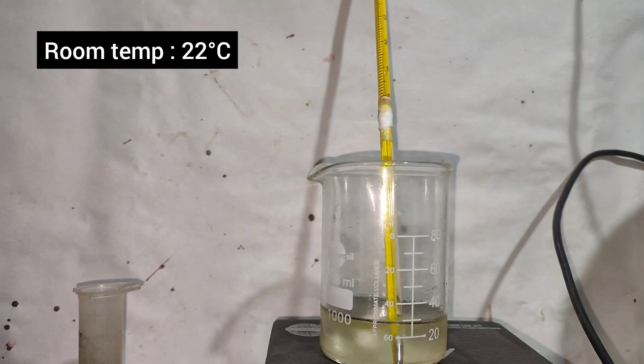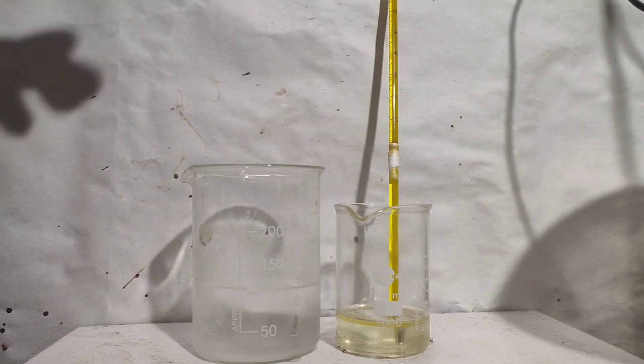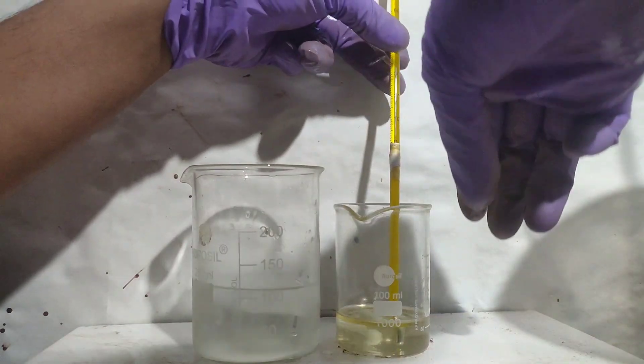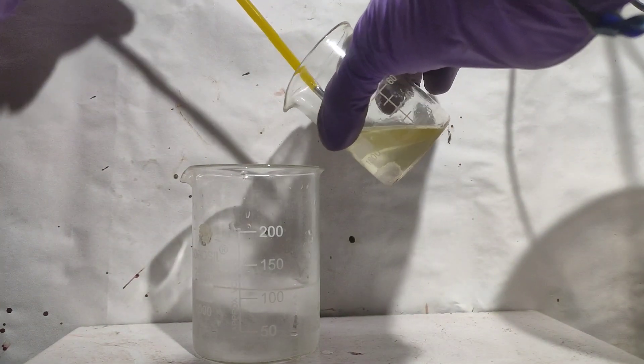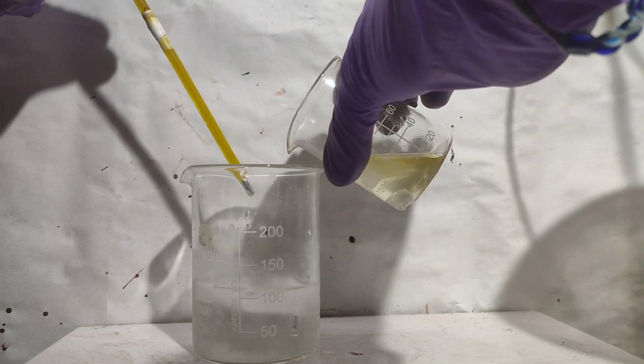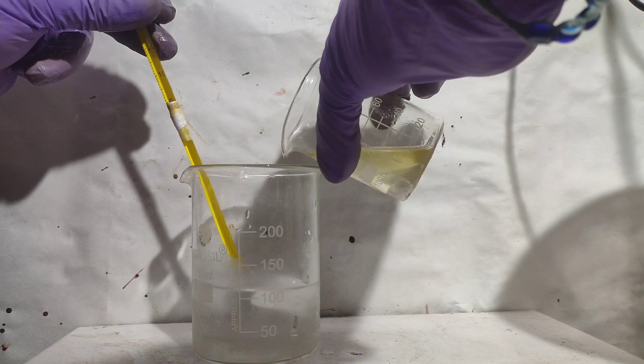Then it was kept at room temperature for half an hour. My room temperature is 22 degrees Celsius. You can see an oily layer floating over the reaction mixture and it is our product, trinitroglycerin or simply nitroglycerin.